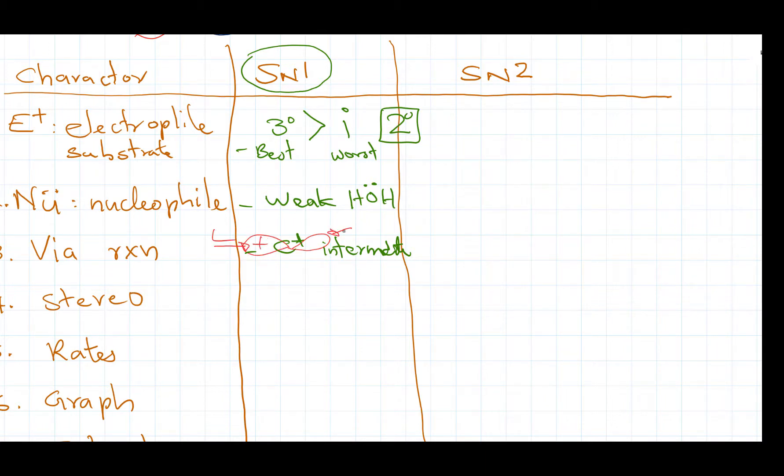the loop, the P loop has empty P orbital and then that will take the nucleophile from the right or left and it will generate the stereochemistry, where it is applicable.